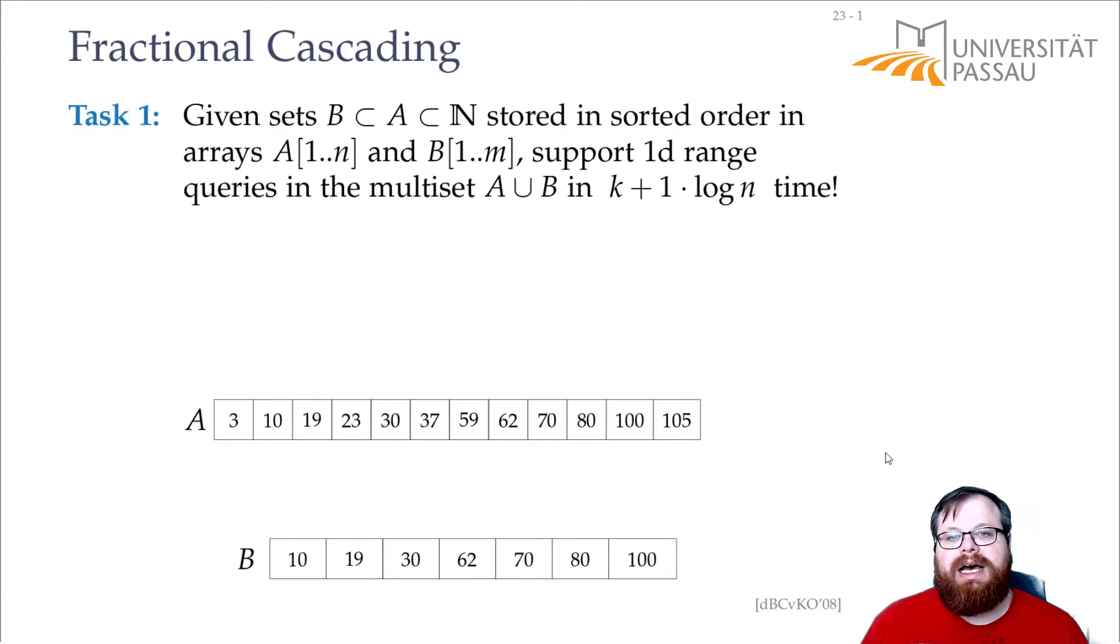What we want to do is I give you two tasks. The first one, we have two sets. We have a set A that has some numbers, and we have a subset B of it. For example, here we have the set A that has these numbers, 3, 10, 19, 23, and so on, and we have a subset B, 10, 19, 30, and so on.